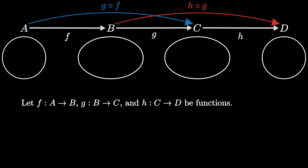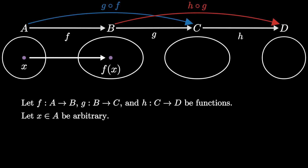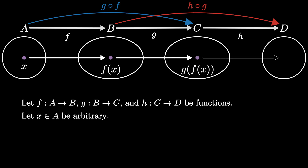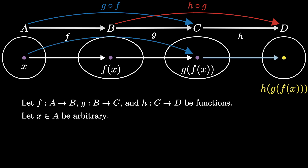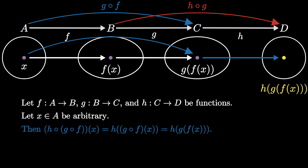Start with an arbitrary element x from the domain a. We can send x through f, send the output through g, and send that output through h, resulting in the element h of g of f of x. We end at the exact same element when we send x through g composed f and then the resulting output through h. So h composed with g composed f of x is equal to h of g composed f of x, which is equal to h of g of f of x.